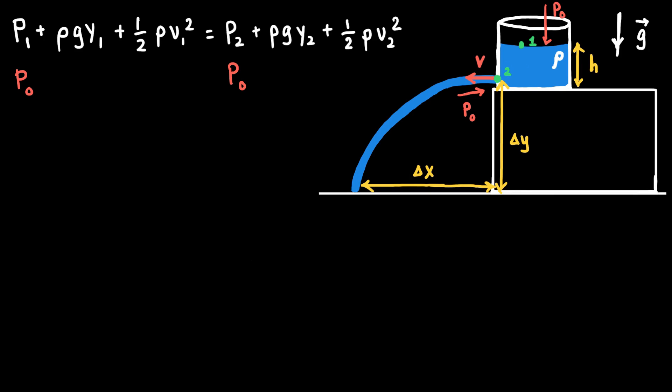Next, consider the gravitational potential energy terms ρgy₁ and ρgy₂. We need to think about the difference in vertical position of the two points, which is labeled h in the diagram. The difference in height between where the water exits the container and the top of the fluid is h. I'll assign y₁ equal to h and y₂ equal to 0, so that the difference in heights is correctly represented as h.